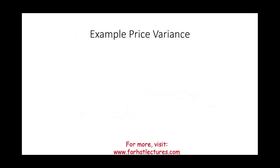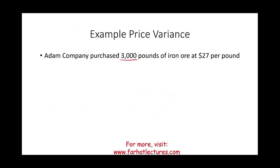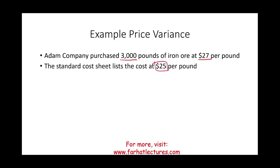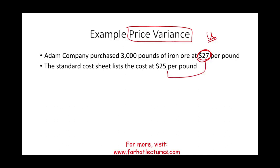Starting with the price variance: assume Adam Company purchased 3,000 pounds of iron ore at $27 per pound. The standard cost lists the cost per pound at $25. We are going to journalize this entry. This price variance is unfavorable because we paid $27 for something we expected to pay $25 per our standard cost sheet.